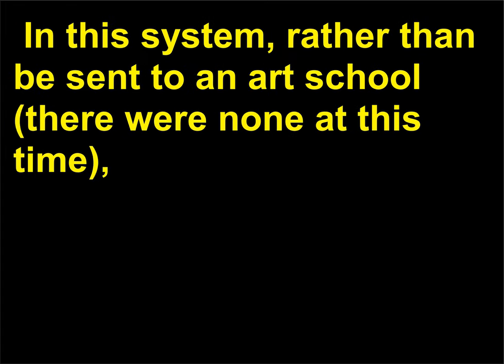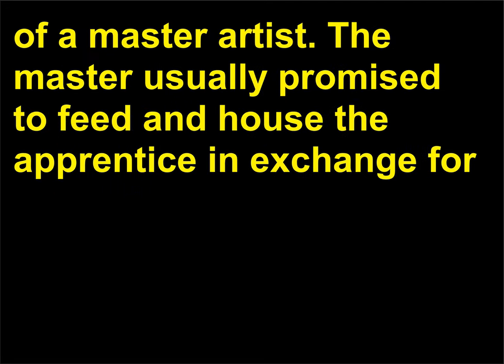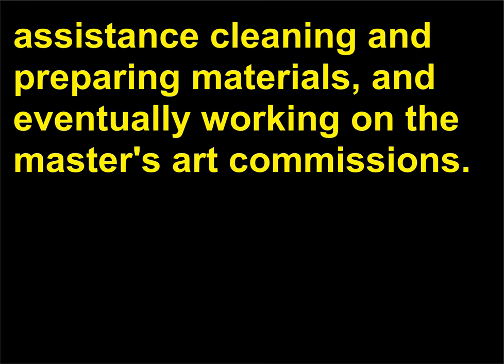In this system, rather than be sent to an art school — there were none at this time — students as young as five years old would be sent to work and train as workshop apprentices under the guidance of a master artist. The master usually promised to feed and house the apprentice in exchange for assistance cleaning and preparing materials, and eventually working on the master's art commissions.